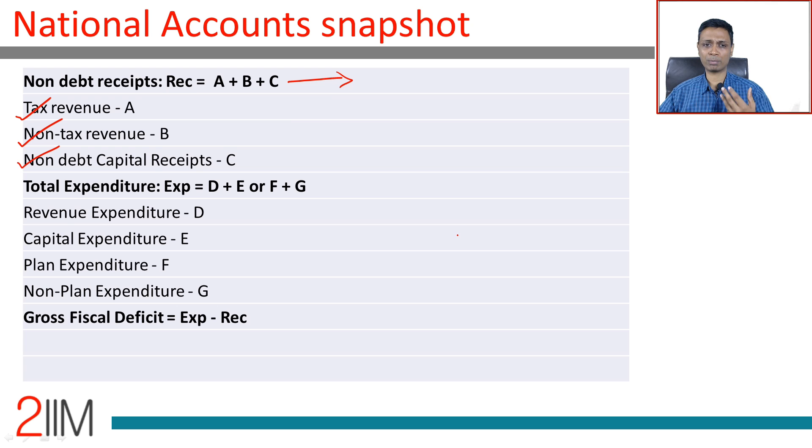The government spends money under two categories: revenue expenditure and capital expenditure, plan expenditure and non-plan expenditure. They're not in the same classification - you can classify expenditure as revenue or capital, and as plan or non-plan.